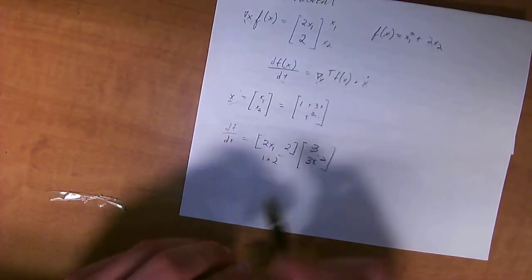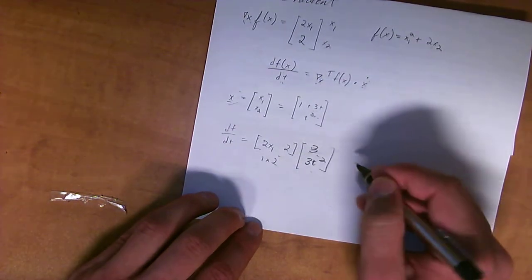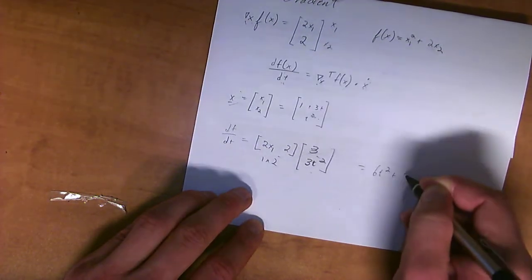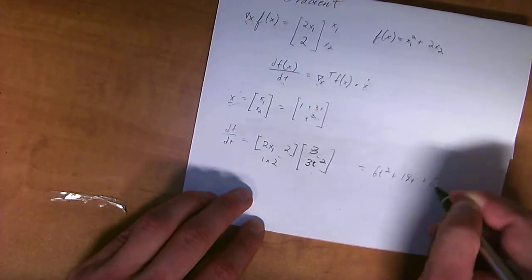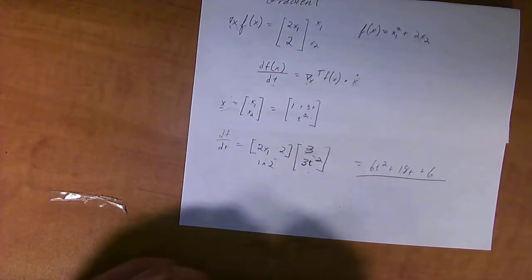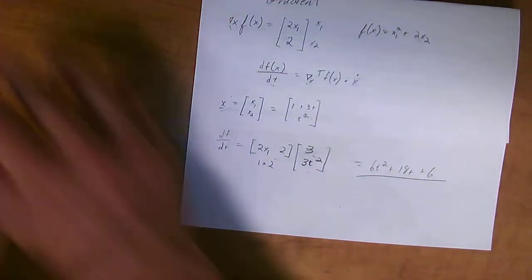And that will all solve out if you do all this math straight across like this. It will equal 6t² plus 18t plus 6. So, kind of convoluted. It can get confusing. But just practice it a couple of times and it'll be fine.